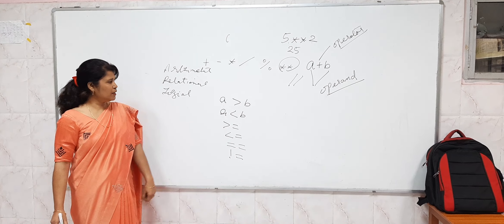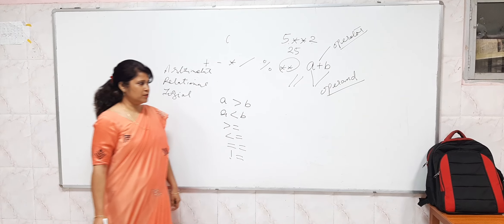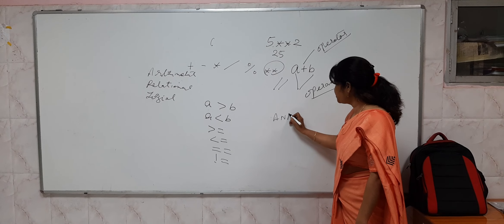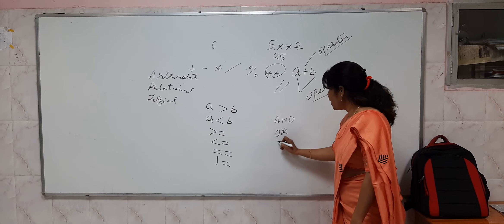The third category is logical operators. What are logical operators? Logical operators are and, or, and not.